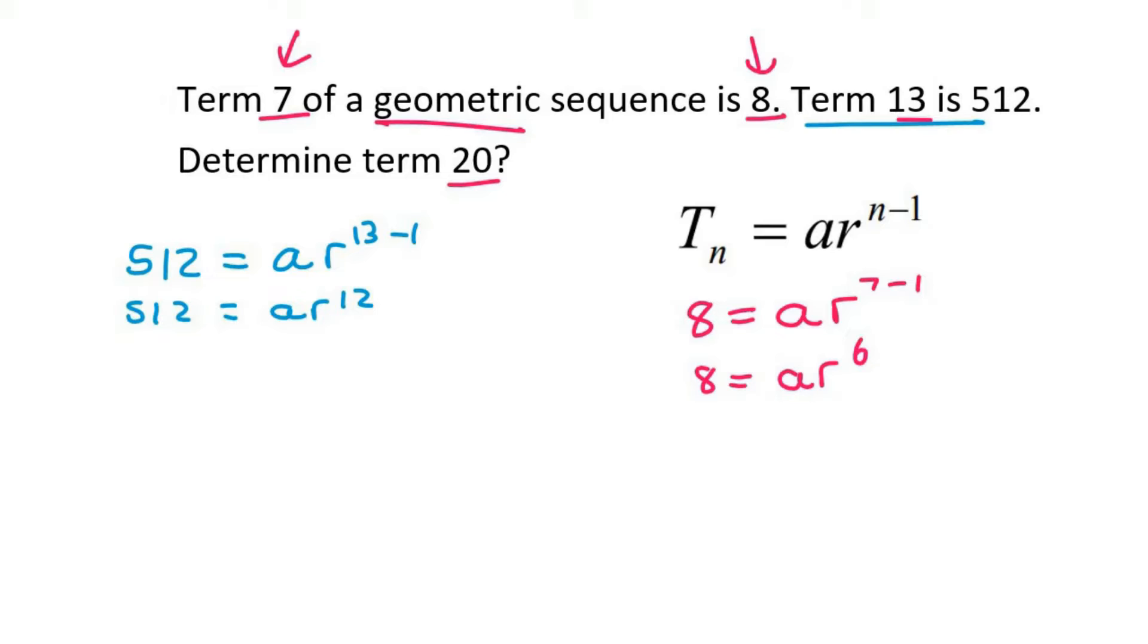Now, some students struggle with this part. What I would advise you to do is get a by itself, either using this equation or that one. You could get r alone, but it wouldn't be nice. So I'm going to get a alone by saying a = 8/r^6. Now I'm going to take this and plug it into the place of a over here.